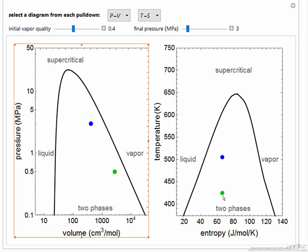The green dot now is our starting point, and we can adjust the quality of that. The pressure is fixed, so using this slider I can increase the quality. And then the final pressure, the blue dot, I can adjust by moving this slider.